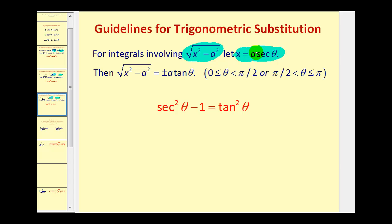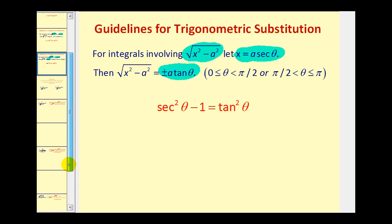When we let x equal a secant theta, the square root of x squared minus a squared will equal plus or minus a tangent theta. That's based upon the identity: secant squared theta minus one is equal to tangent squared theta. So let's go ahead and look at an example.